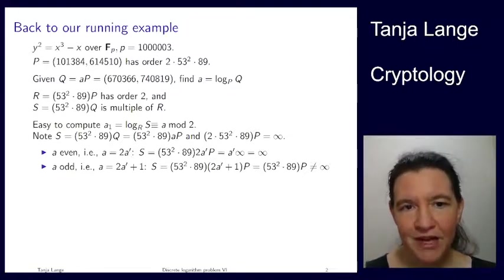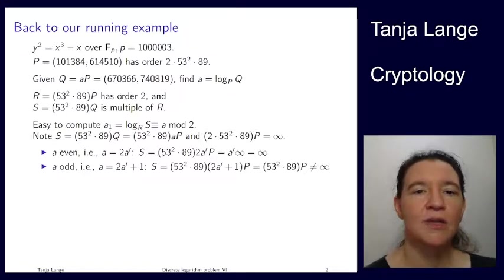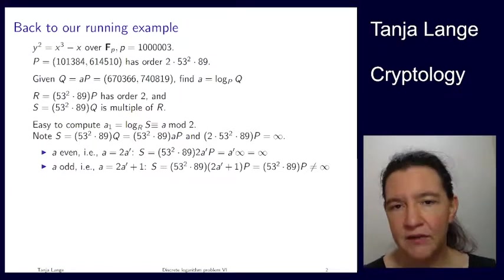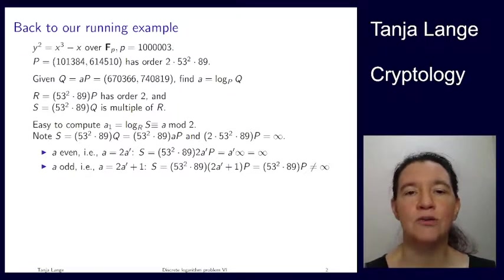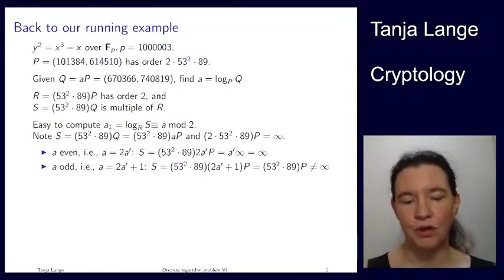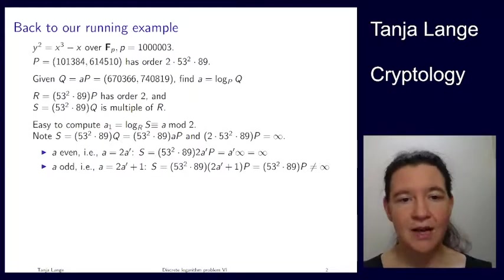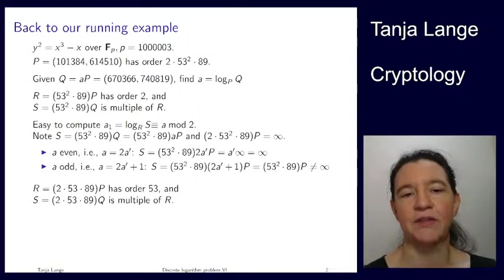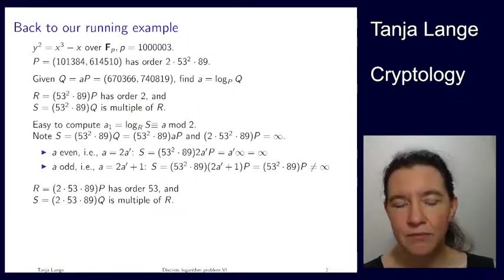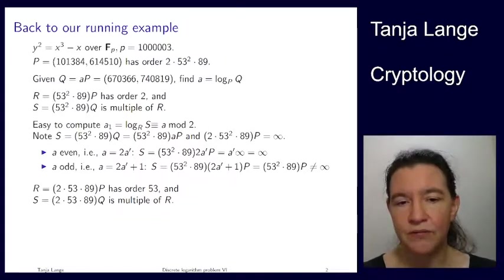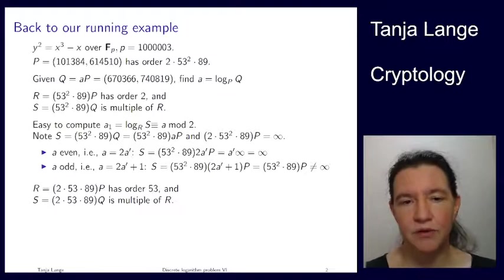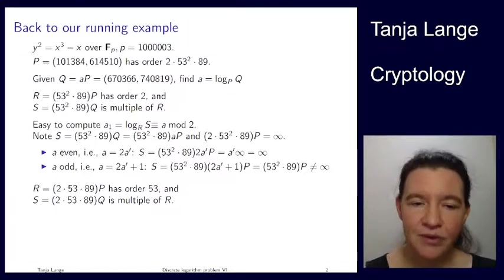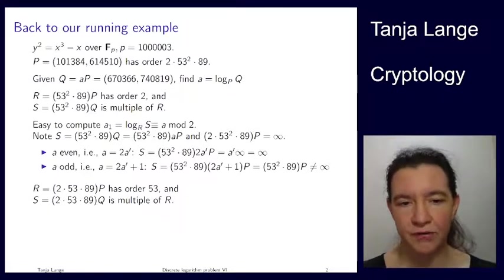Well, we have found one bit of the discrete log, and I think this was more work in talking than it would have been work in computing it. So, two scalar multiplications, and we got these scalars by taking the group order, sorry, the order of P, and just skipping this 2. And that gives us a discrete log problem of order 2, and that also gives us information about a modulo 2. Well, there are more factors. Let's do this with 53. So, we're now taking the same thing, and we're skipping one of the factors of 53. So, that means that the new R has order 53, and the new S is again a multiple of R.